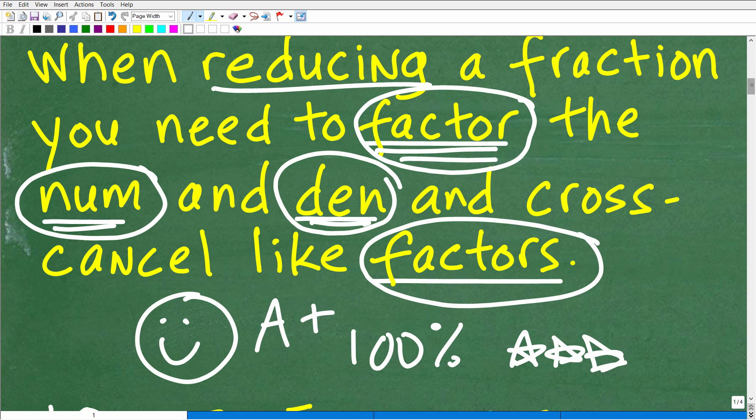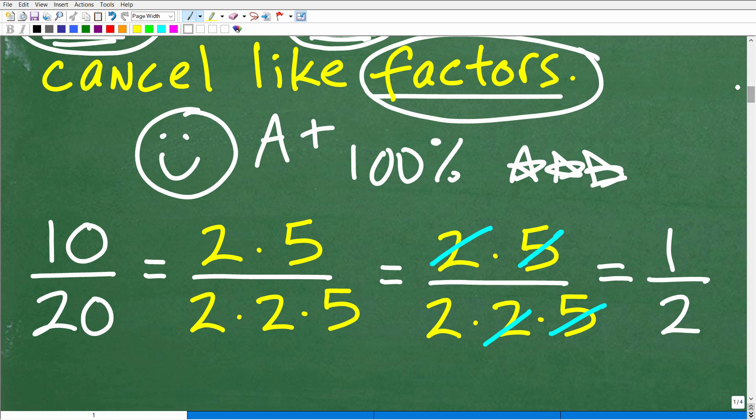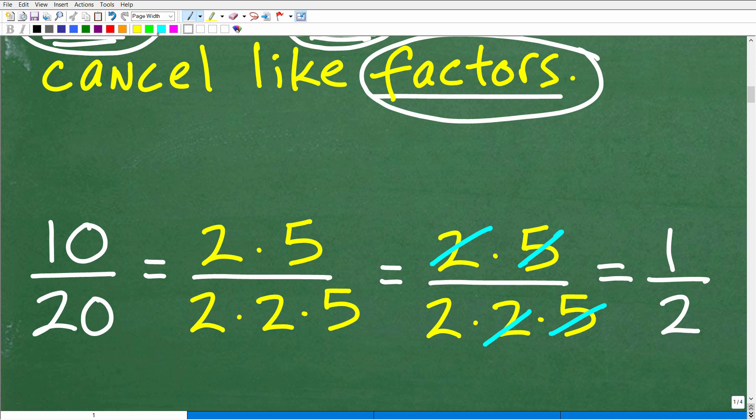But let's go ahead and see what this actually means in terms of reducing a fraction. So reducing a fraction is basically simplifying a fraction. Let's take a look at the fraction 10 over 20. So would you leave that fraction like this? Well, hopefully not. Hopefully you're saying that fraction is equal to one half.